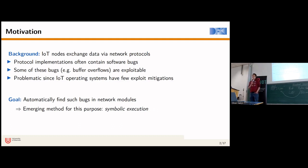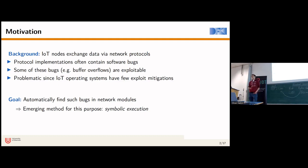We want to address this problem, and we're not using Rust. Instead, we want to automatically test the implementation of network protocols in order to find these bugs, and thereby ensure that we do not run into them when we deploy our IoT nodes in a production environment where an attacker can potentially send packets. The method we are using for this purpose is symbolic execution, which is an emerging automated software testing technique that has been gaining traction in recent years.